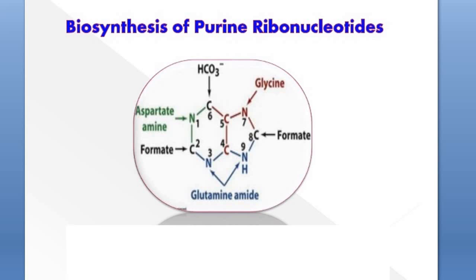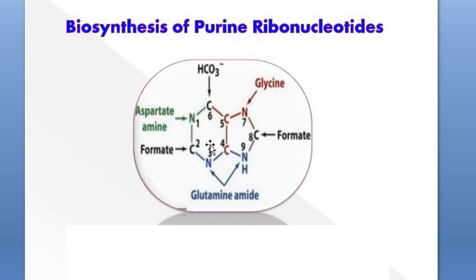Now here is the purine de novo nucleotide synthesis. In the purine structure you can see there is a 6-membered ring fused with a 5-membered ring. The positions N1, N3, N7, and N9 are nitrogen atoms; the rest are carbon atoms. The numbering of the purine ring is in the anti-clockwise direction: N1, C2, N3, C4, C5, C6 for the main ring, and then N7, C8, N9 for the side ring. So purines are numbered in the anti-clockwise direction.